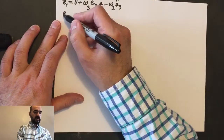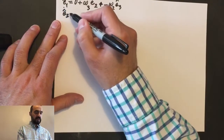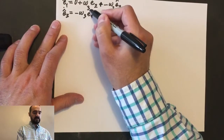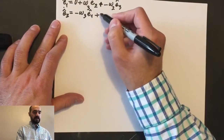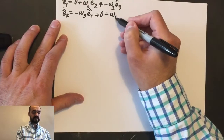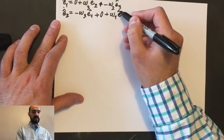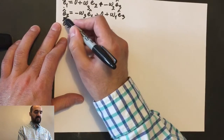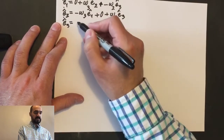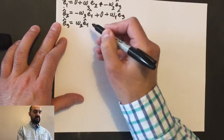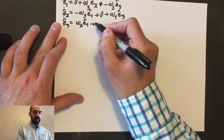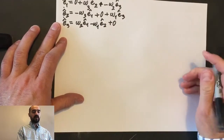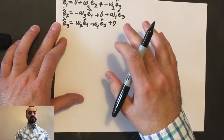And then we have e2_hat_dot equal to negative omega_3 * e1_hat, plus zero, plus omega_1 * e3_hat. And then we had e3_hat_dot equal to omega_2 * e1_hat, minus omega_1 * e2_hat, plus zero. So we put this in table form in the latest lesson.